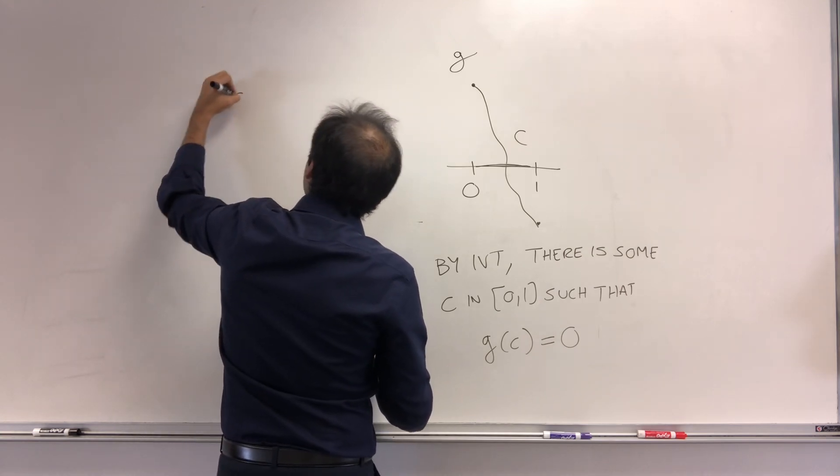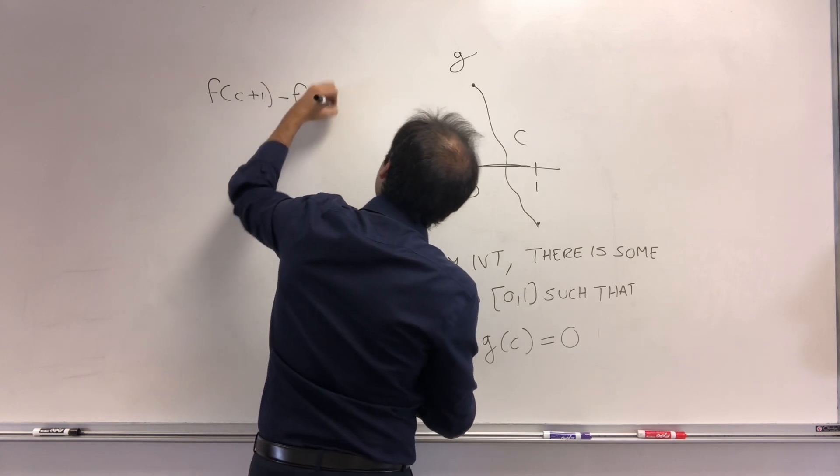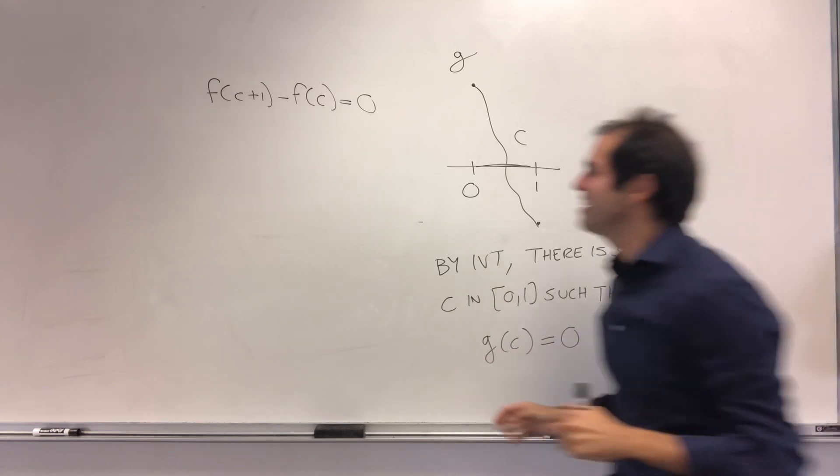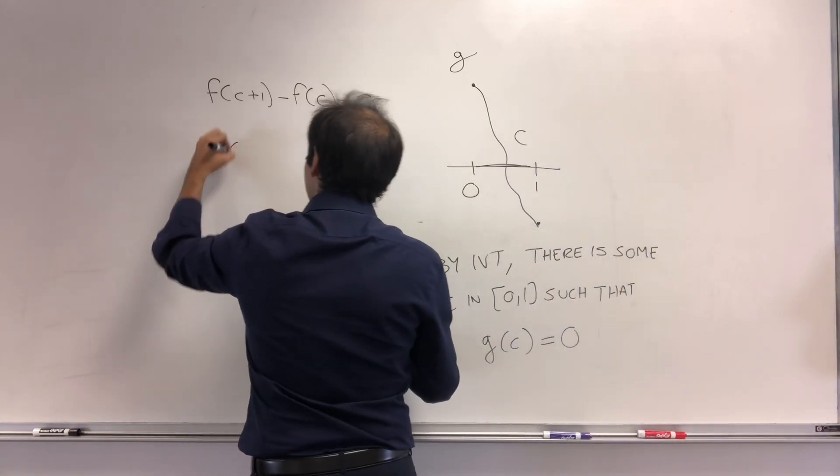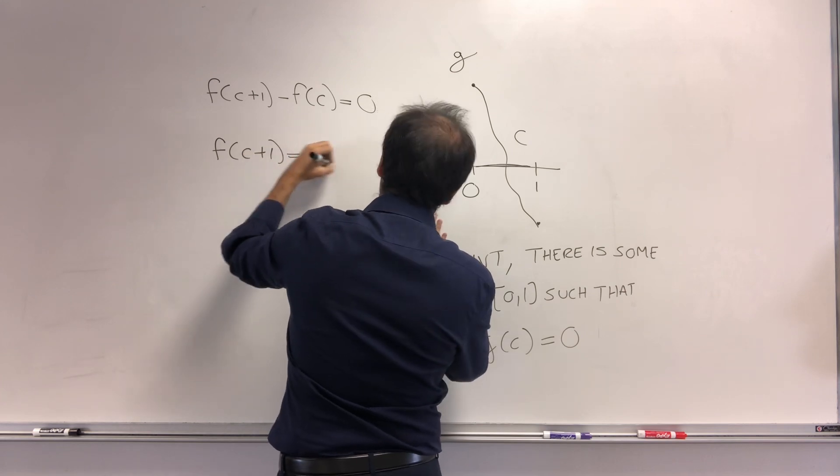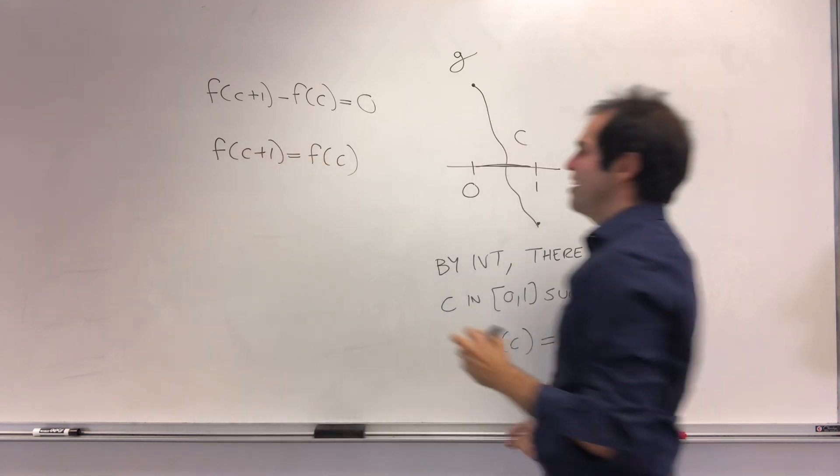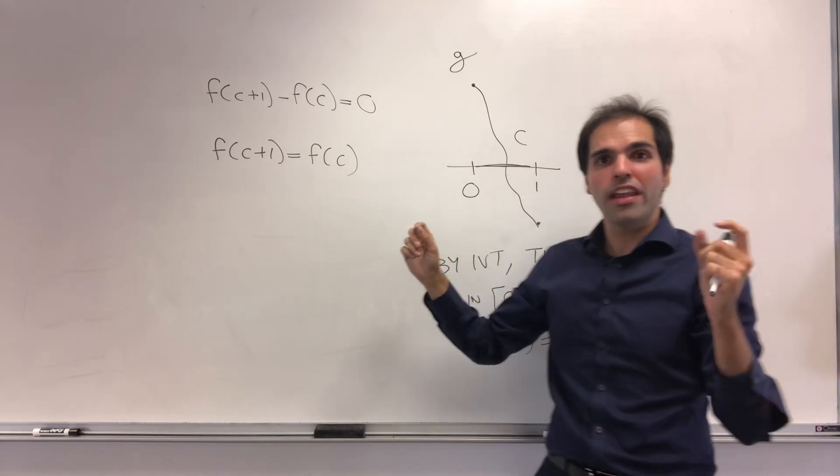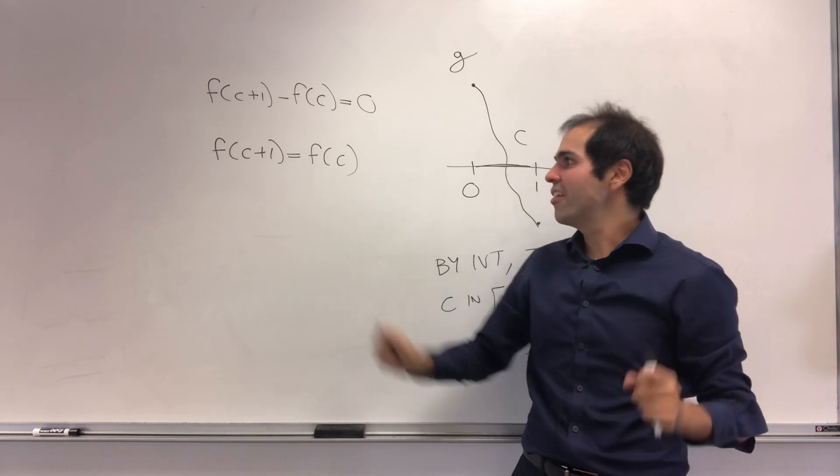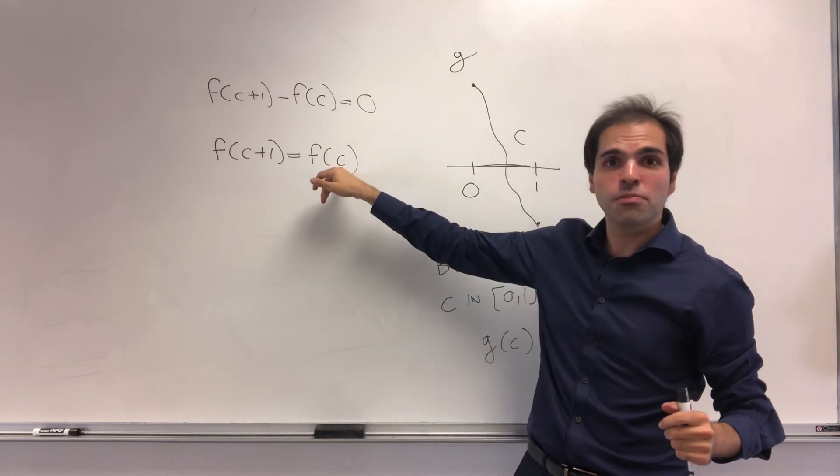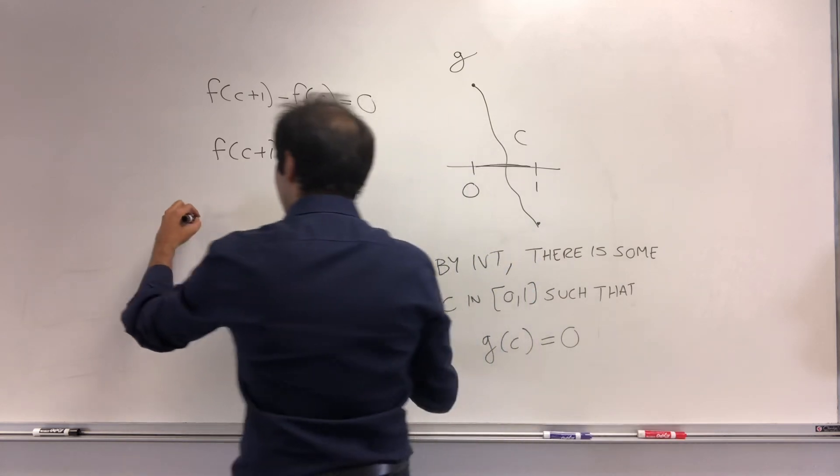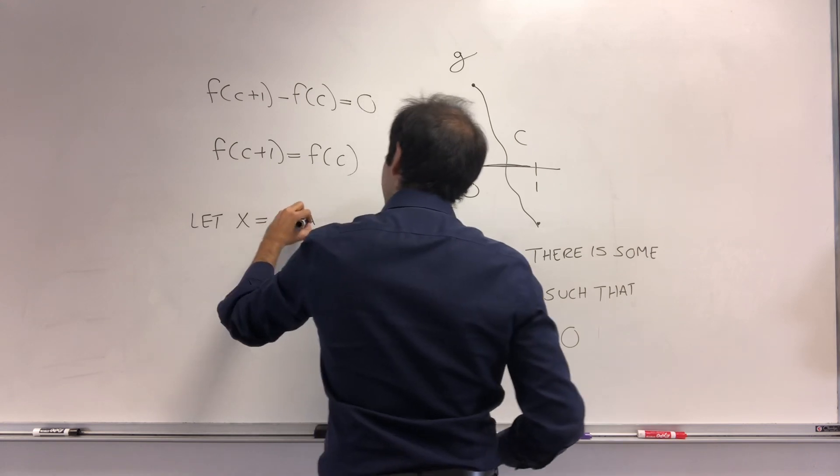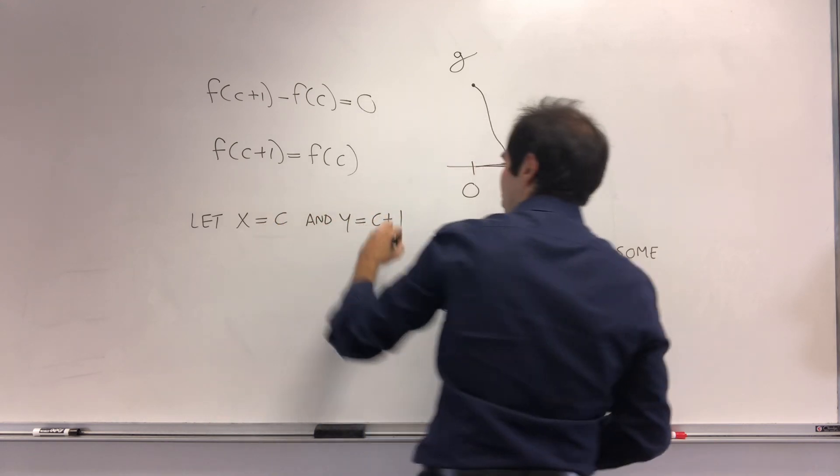So f(c+1) - f(c) = 0, which means f(c+1) = f(c). How does that solve our problem? Well, remember, we want to show that f of a value equals f of some other value. But now it's easy. Let x = c and y = c + 1.